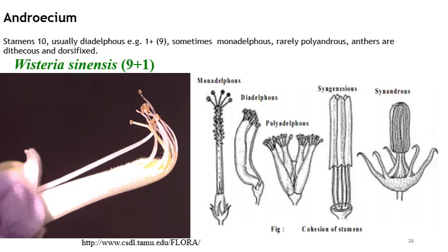In this family, nine stamens are united and one is free; in such a case we refer to it as diadelphous. Sometimes stamens show a monadelphous pattern, in which the stamens have their filaments joined to form a tube-like structure, resulting in a flower with a large central column that bears many anthers. In addition, rarely the stamens are free from each other, which is referred to as polyandrous.